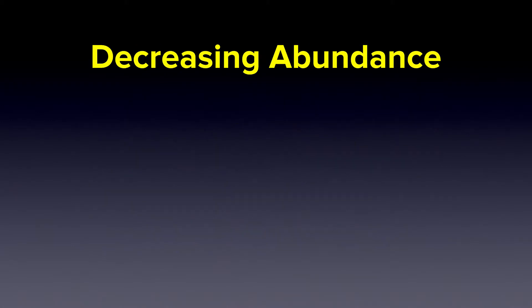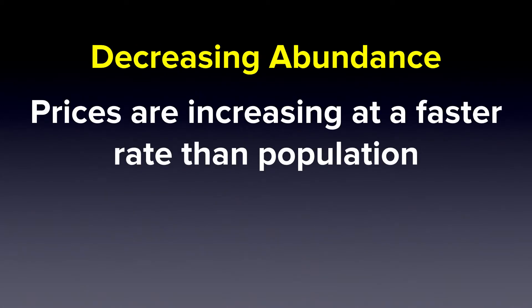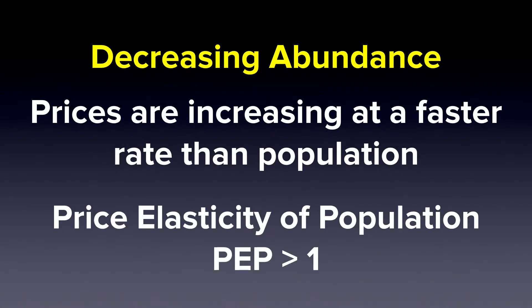Decreasing abundance is defined as a condition where prices are increasing at a faster rate than population. The PEP coefficient will be greater than one.